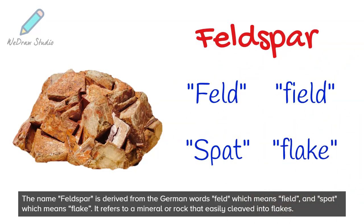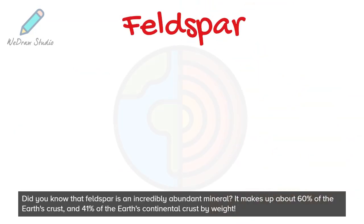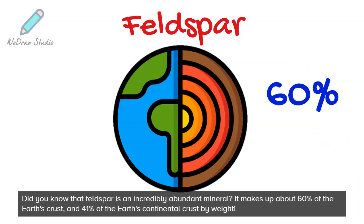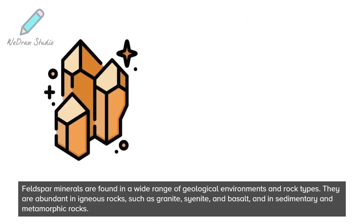It refers to a mineral or rock that easily cleaves into flakes. Did you know that feldspar is an incredibly abundant mineral? It makes up about 60% of the Earth's crust and 41% of the Earth's continental crust by weight. Feldspar minerals are found in a wide range of geological environments and rock types — they are abundant in many settings.